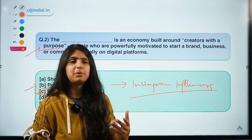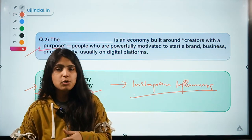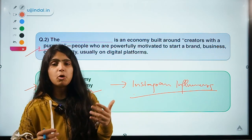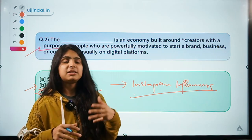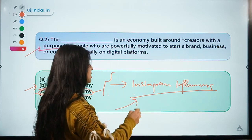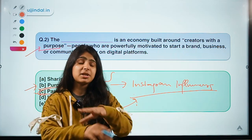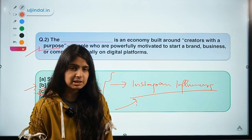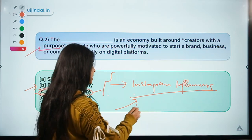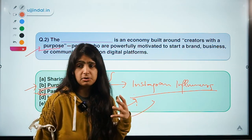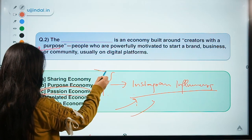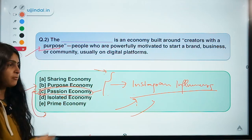Once Instagram influencers start becoming popular and go viral, they start getting modeling offers, chances to inaugurate new stores, and earn through YouTube and Instagram. They turn into celebrities just by having influence. If you are able to influence people and generate an audience, you can turn it into a profit-making entity. This is the passion economy, and it is just one example.